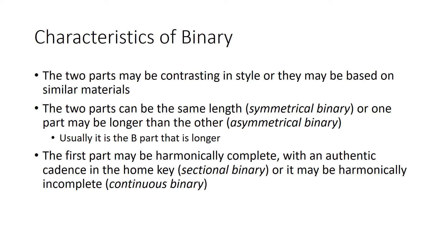The first part, if it's harmonically complete, meaning it ends with an authentic cadence in the home key, then we call it a sectional binary. But if the first part is harmonically incomplete, it doesn't end in the home key, then it's continuous binary, because the piece needs to continue in order for it to reach the home key again. And that's actually the most common type of binary form, where it moves in the first section away from the home key, and then in the second section moves back towards the tonic.